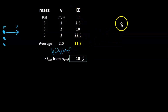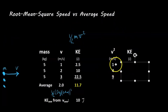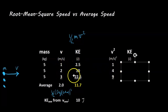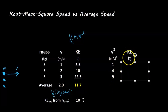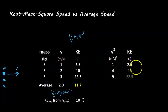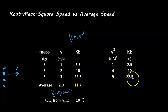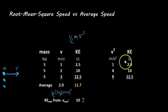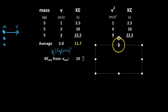So how can we fix this? We use the root mean squared speed. We take v squared for each object: 1 squared = 1, 2 squared = 4, 3 squared = 9. If we then calculate the resulting kinetic energies using one-half mv squared, we get 2.5, 10, and 22.5 joules — the same kinetic energies as before, not surprisingly, since we're using v squared rather than v.